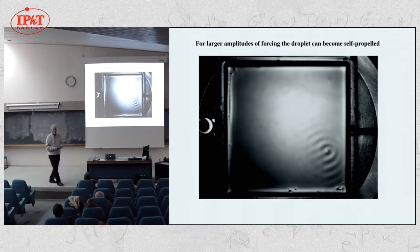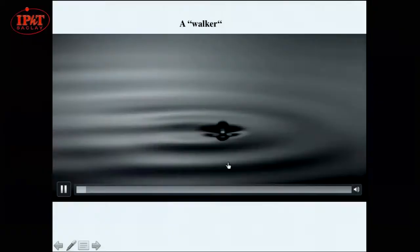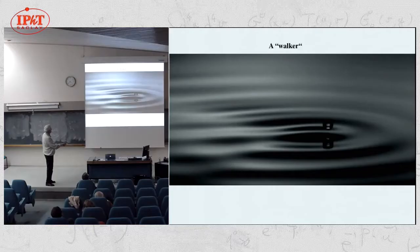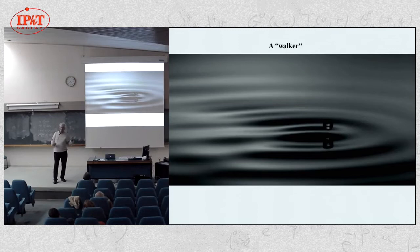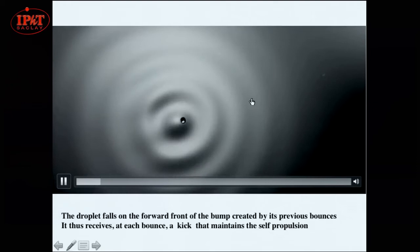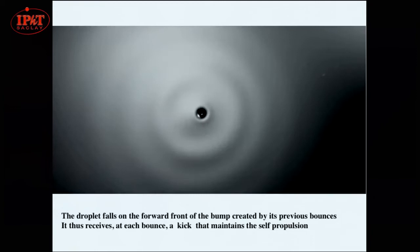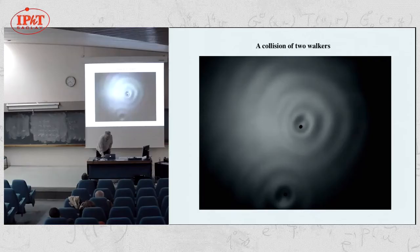Both the drop and the bath are silicon oil — you draw the drop out of the bath with a toothpick. The drop moves because it bounces asymmetrically on the bump formed at the previous oscillation. This repeats itself and makes the system self-propelled — there's a symmetry breaking where the drop always bounces on the forward front of the bump, propelled by falling on a slanted interface.